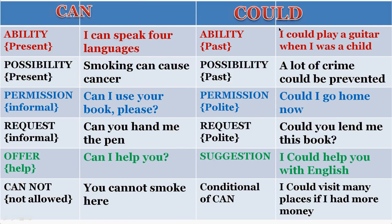To start with, we have can and could. When you want to express ability in the present: 'I can speak four languages.' That's your ability in the present. If you want to say past ability: 'I could play a guitar when I was young.' So you could play because you were able to play a guitar when you were young. That's the basic difference.